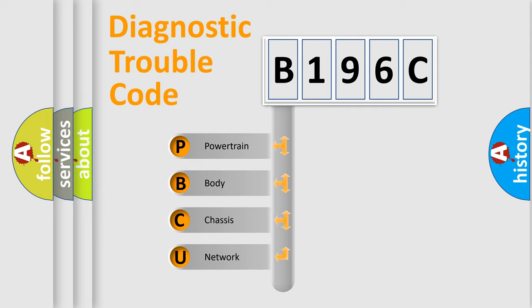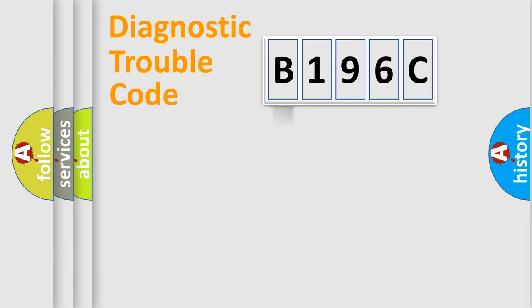We divide the electric system of automobile into four basic units: powertrain, body, chassis, and network. This distribution is defined in the first character code.